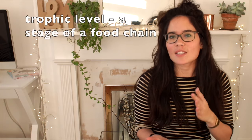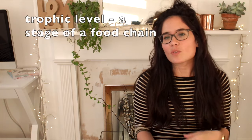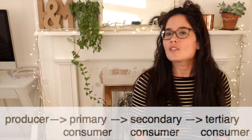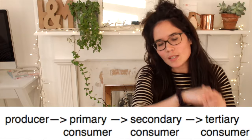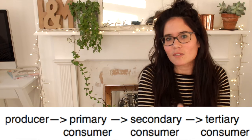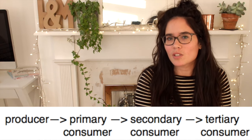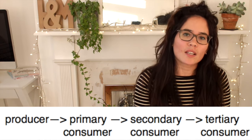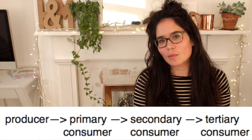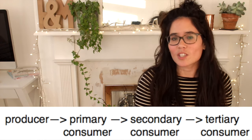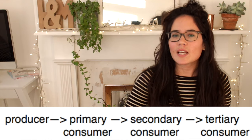A food chain is just a way of showing what eats what. We call each stage of the food chain a trophic level. Food chains always start with producers, which tend to be green plants, because a producer absorbs energy from the sun. What eats the producer is the first consumer, called the primary consumer. Next is the secondary consumer, which eats the primary consumer.